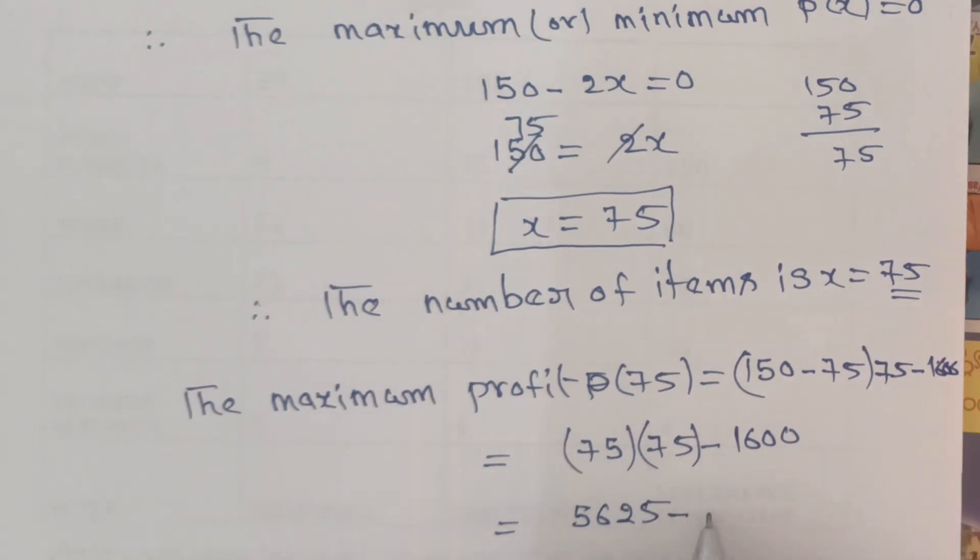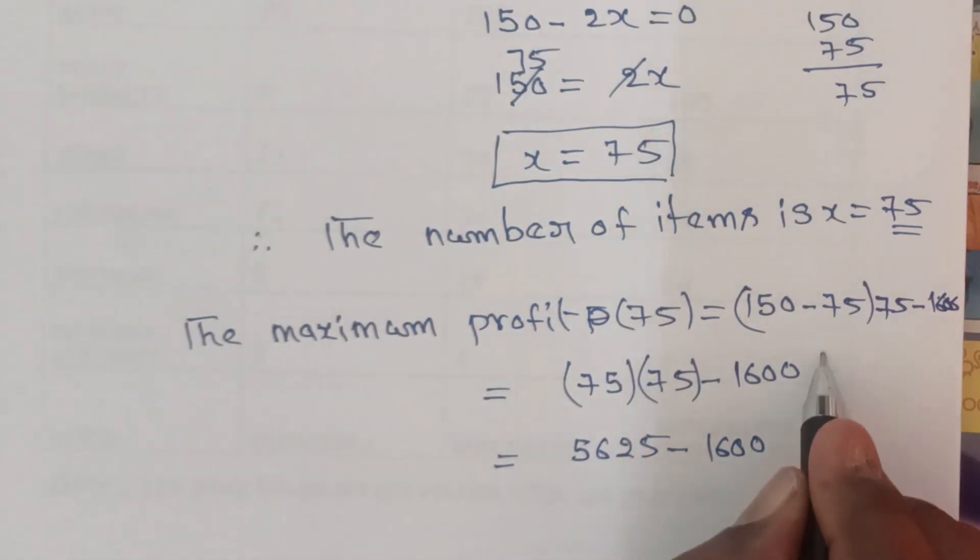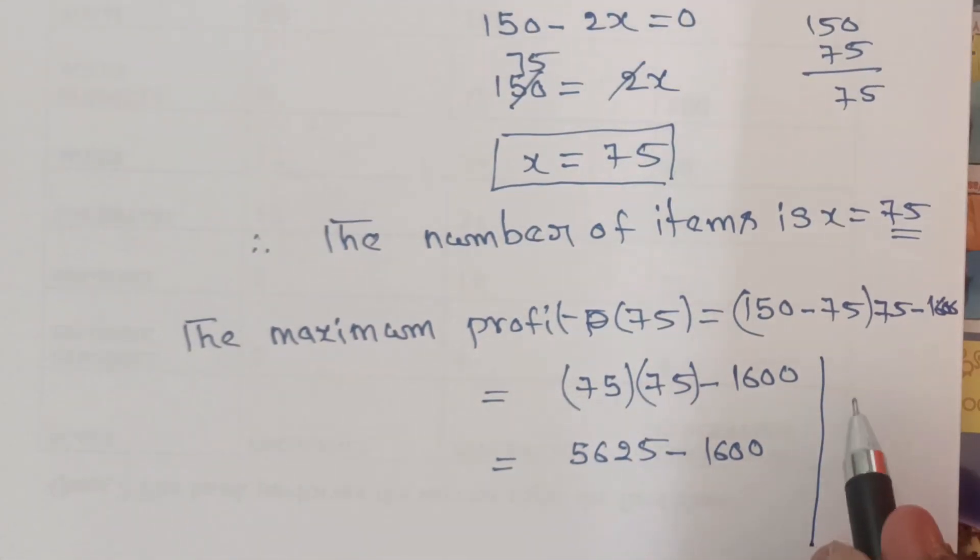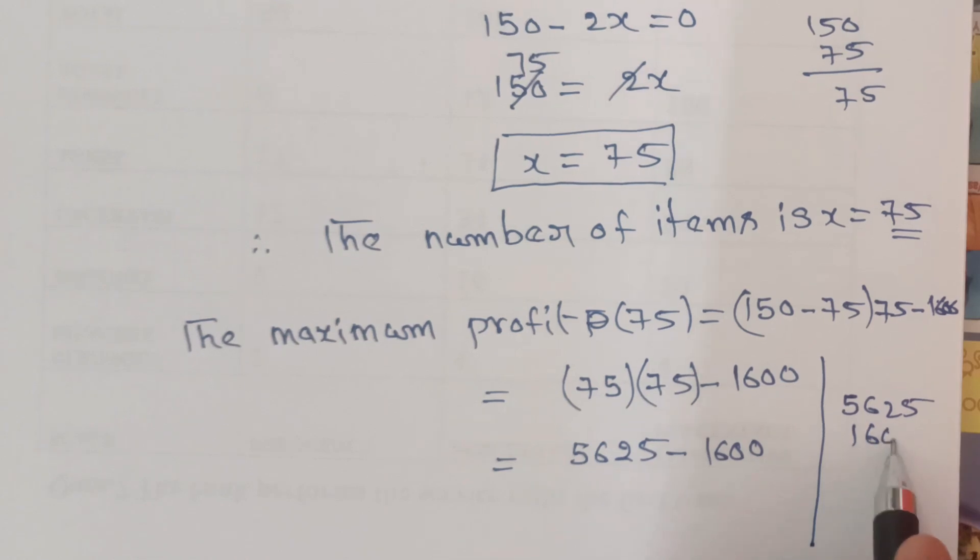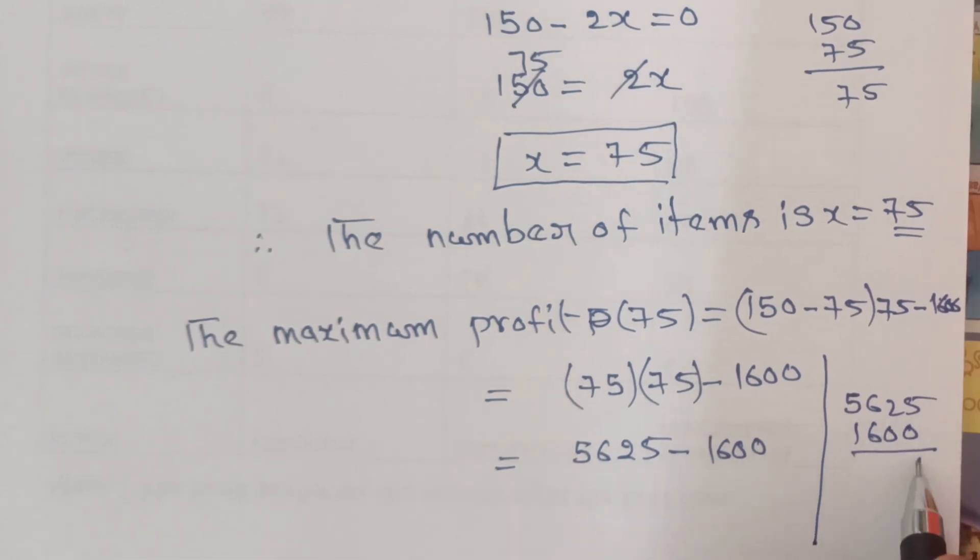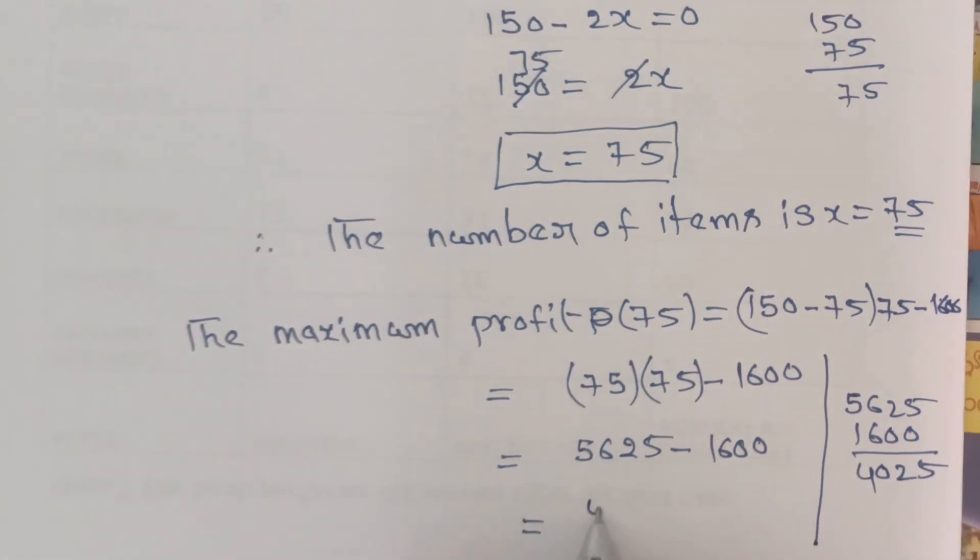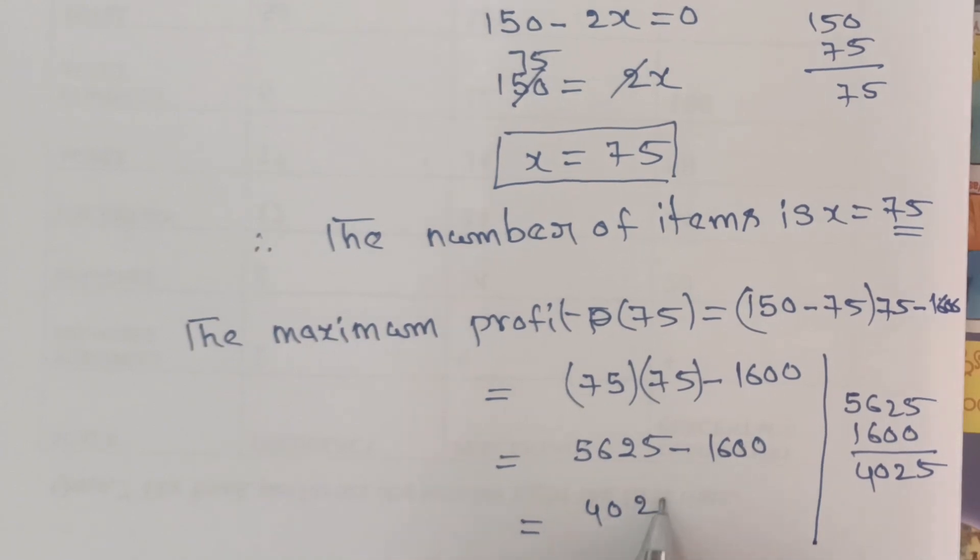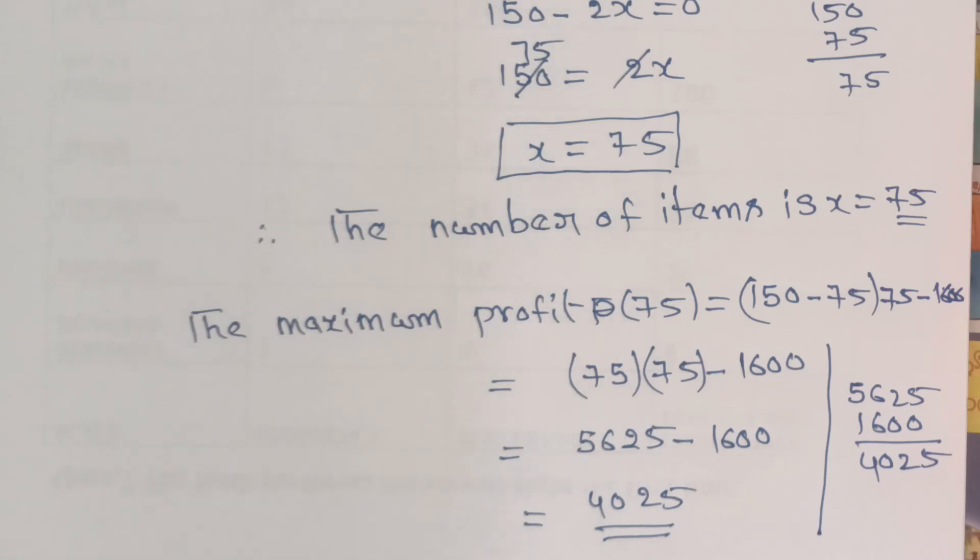So we have 5625 - 1600. Doing the subtraction: 5625 - 1600 = 4025. The profit is 4025 rupees.